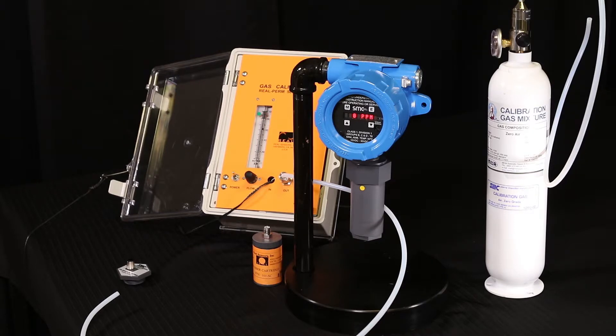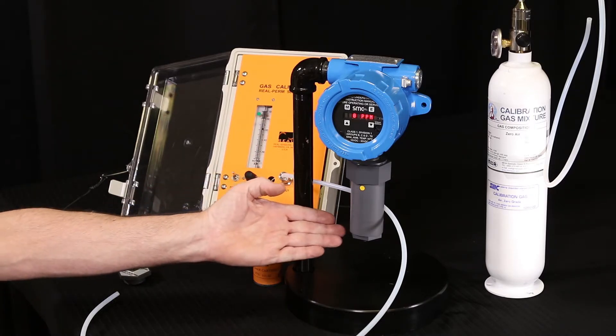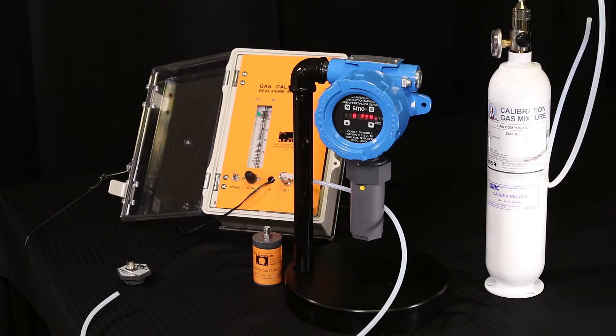Once calibration is complete, turn off the pump and disconnect the perm tube from the T. Be sure to restore the perm tube with the scrubber cap. Reinstall the gas detector into service and allow at least one hour for it to stabilize before beginning the calibration process.